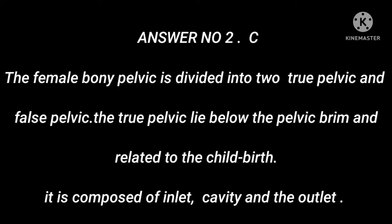Answer number 2: C. The female bony pelvis is divided into two — true pelvis and false pelvis. The true pelvis lies below the pelvic brim and is related to childbirth. It is composed of the inlet, cavity, and the outlet.